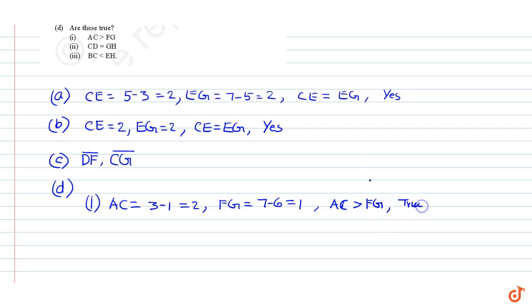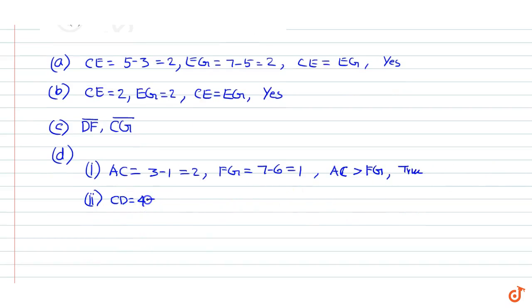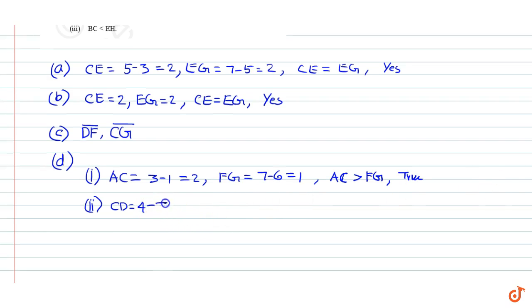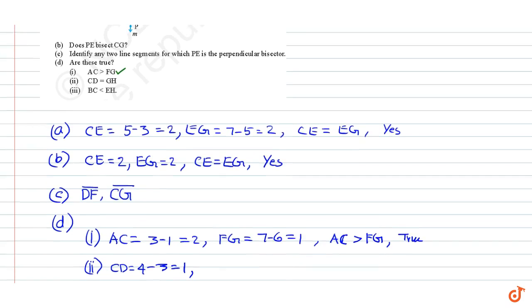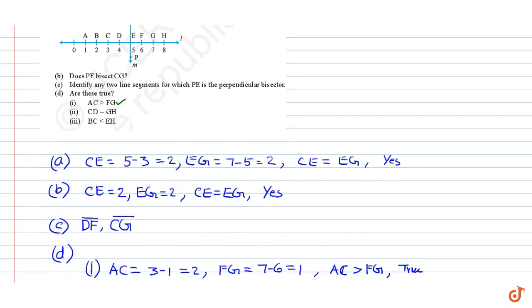Part (ii): CD = GH. CD = 4 - 3 = 1, GH = 8 - 7 = 1. Therefore CD = GH. The answer is true.